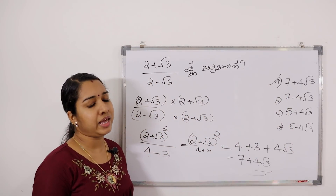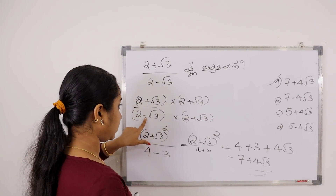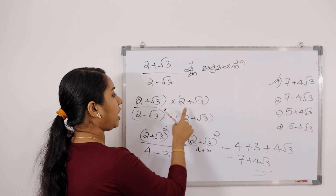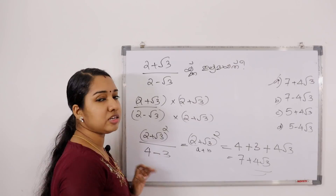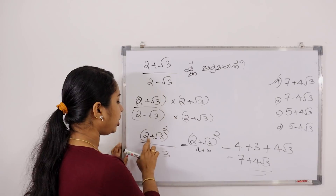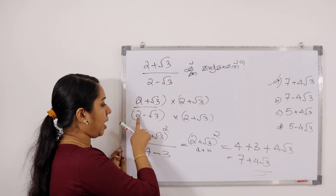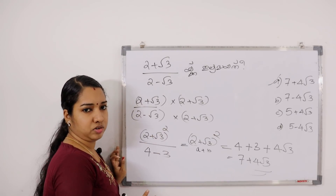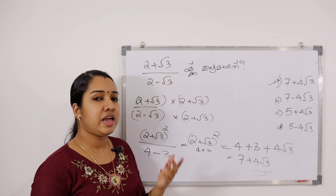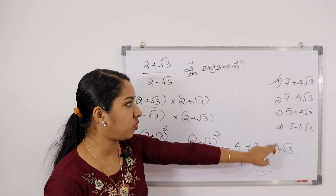So if 2 plus root 3 is whole square by 1, then a plus b into a minus b equals a minus b square. So a squared plus b squared plus 2ab equals a squared plus b squared plus 2ab. The final answer is 2 plus root 3 whole squared over 1, which simplifies to 7 plus 4√3.